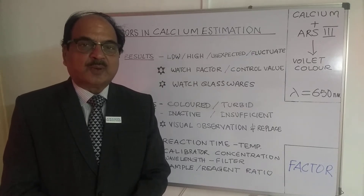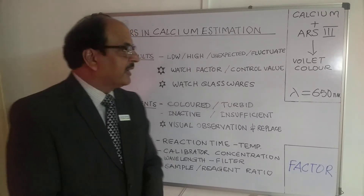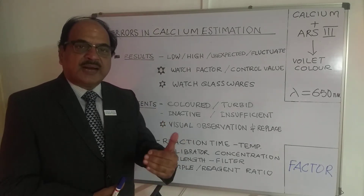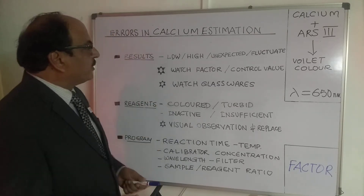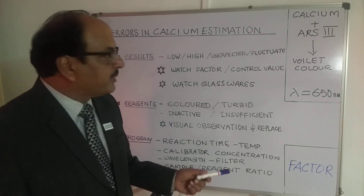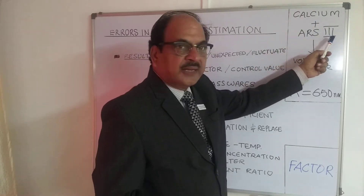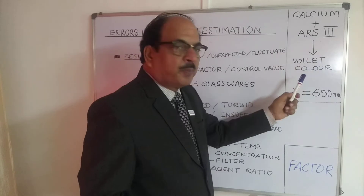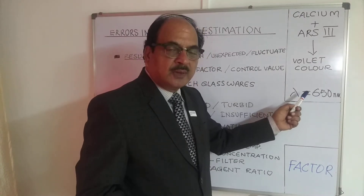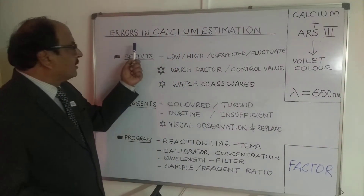Hi friends, greetings from Anambo Laboratories Private Limited. In this series on common errors in clinical chemistry, let's take calcium — specifically calcium estimated through the calcium arsenazo reagent. Before we go into the clinical chemistry errors, let's see how this calcium arsenazo reagent reacts to estimate calcium present in serum. In the presence of arsenazo III reagent, calcium converts into a violet or purple color having maximum absorbance at around 650 nanometers, though wavelengths around 620–630 nm can also be used.